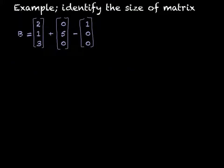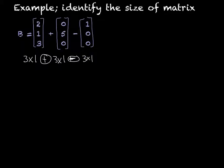I'm going to do some examples. I want to identify the size of this matrix. This first one is three rows by one column, plus we're adding it to three rows by one column, and then we're going to subtract three rows by one column. So because they are all three rows by one column and we are adding or subtracting, our resulting matrix is going to be a three by one.